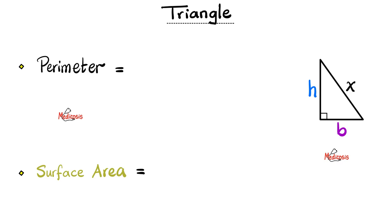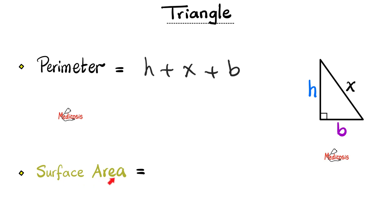Next, the triangle. Why do you call it a triangle? Tri means three, and angle is an angle — it has three angles and also three sides. What's the perimeter of the triangle? It's H plus X plus B. How about the surface area of the triangle? It's half the base times the height — half the base multiplied by the height.